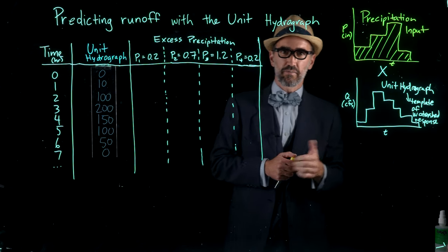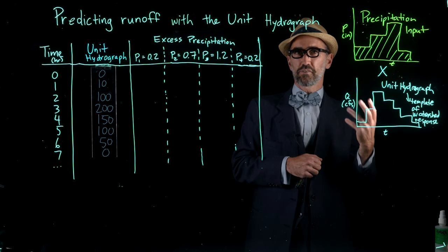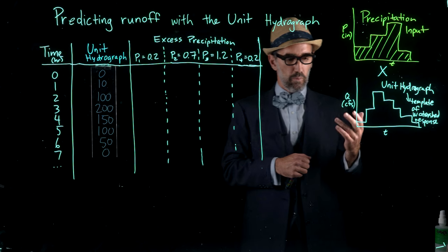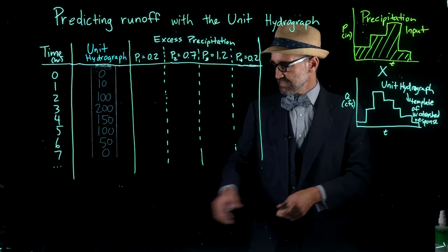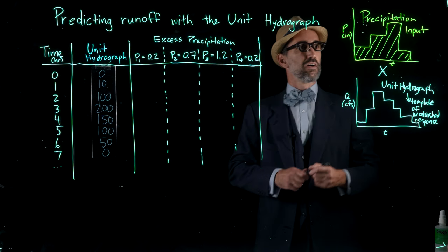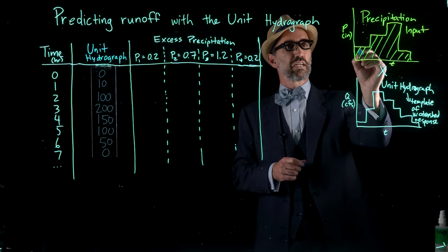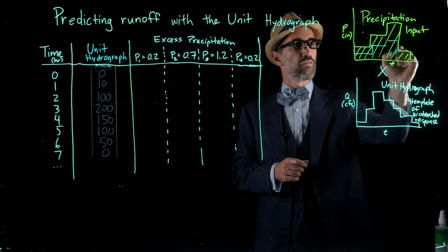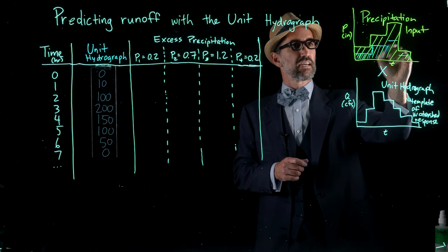The other piece of information that was in the problem is that the abstraction rate of the watershed is 0.03 inches per hour. So what we have to do first is subtract the abstraction rate from our total precipitation input.